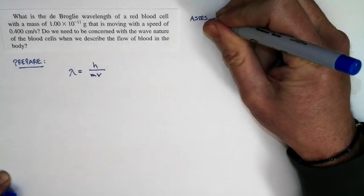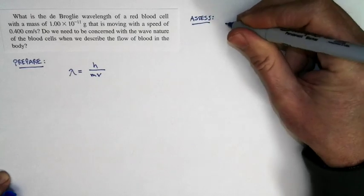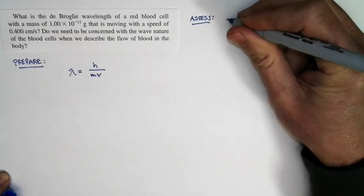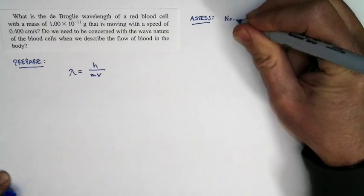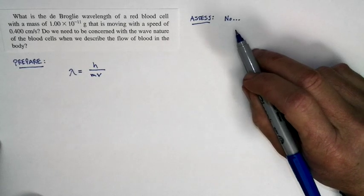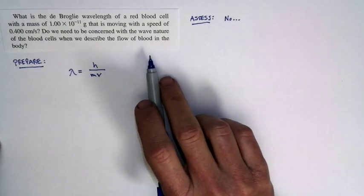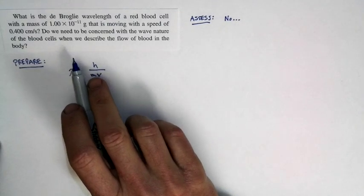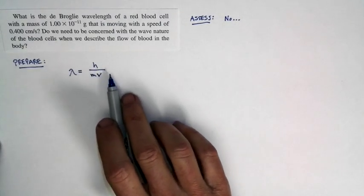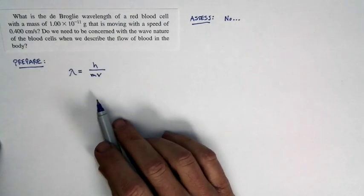I'm going to start with an assessment. And my assessment is, no, I do not expect this to make a difference. Because I've seen little movies of red blood cells moving through capillaries at kind of a modest speed, and they don't look smeared out. They don't look wavish. They look distinctly like little corpuscles.